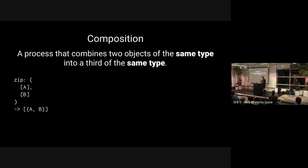We might be tempted to say zip is a form of composition — a process combining two objects of the same type into a third of the same type — but if we're super pedantic, the types don't quite match up: we have an Array of A's, Array of B's, and Array of (A, B)'s. We could fudge the definition, but the really powerful thing is we don't have to. We can keep a strict definition and look at the problem in a slightly different way and see that underneath the hood it really is expressing ideas of combining two things into one.